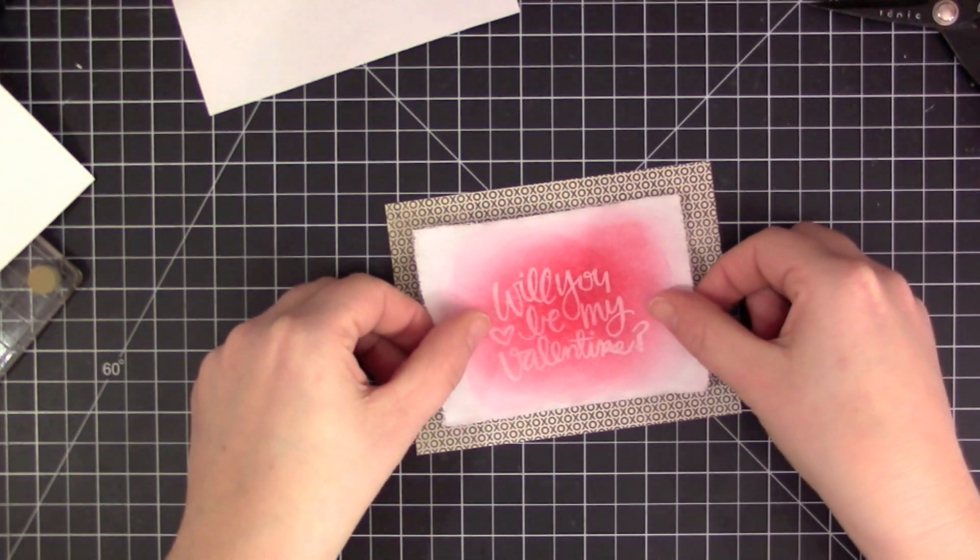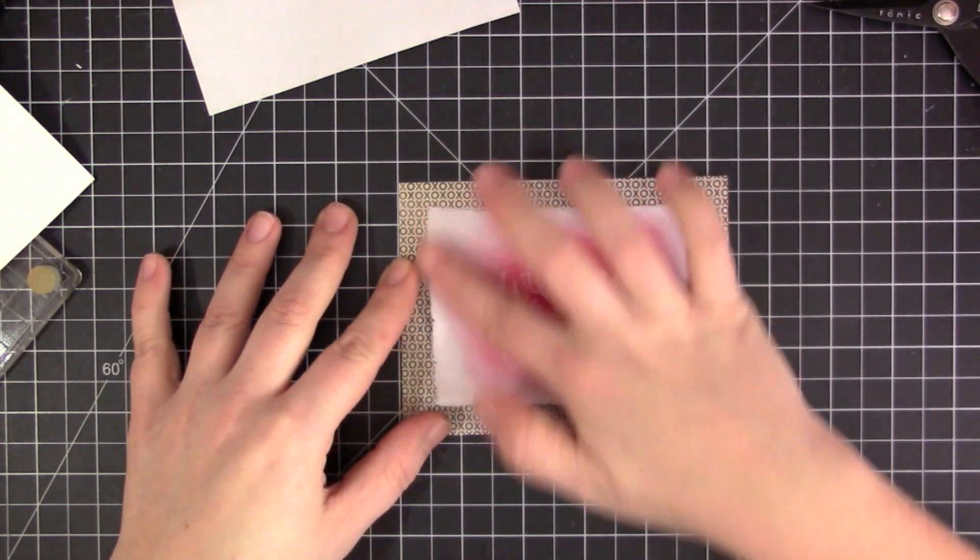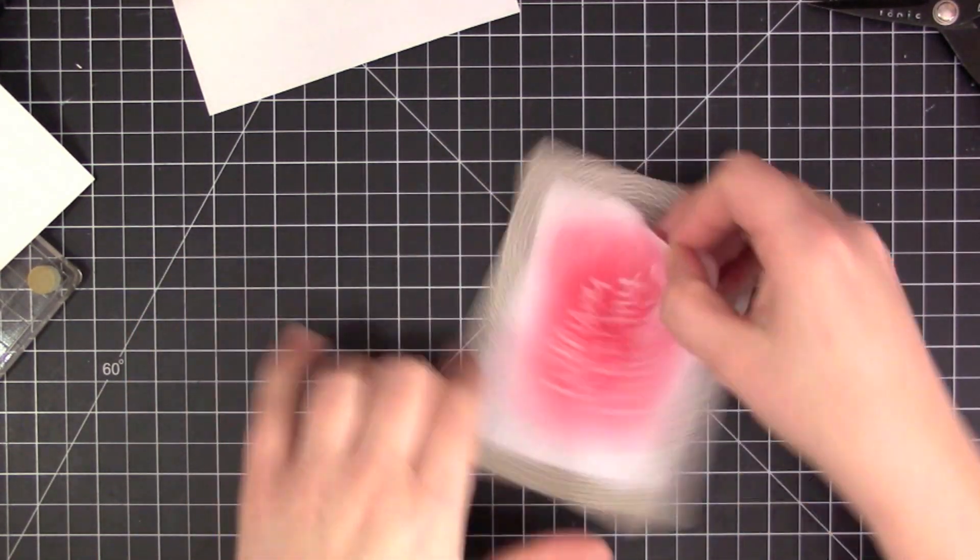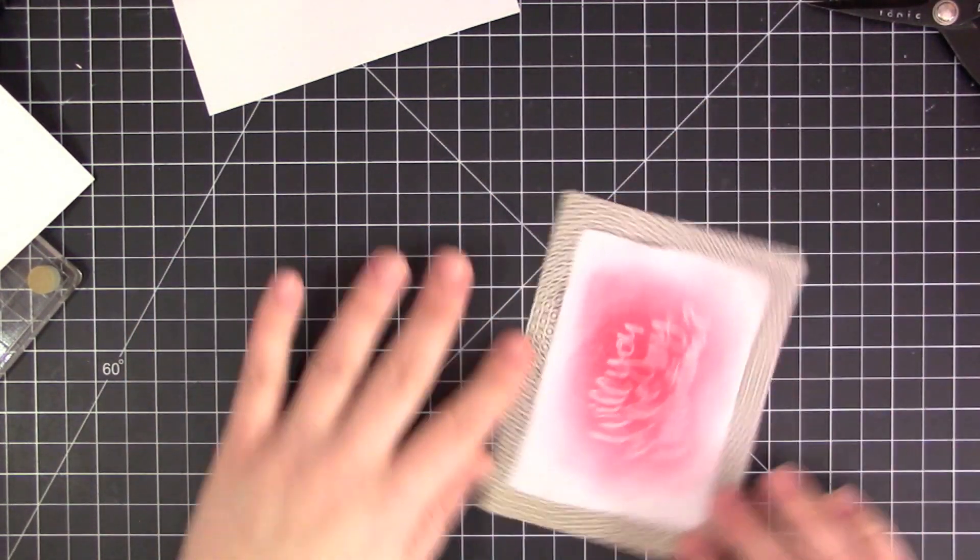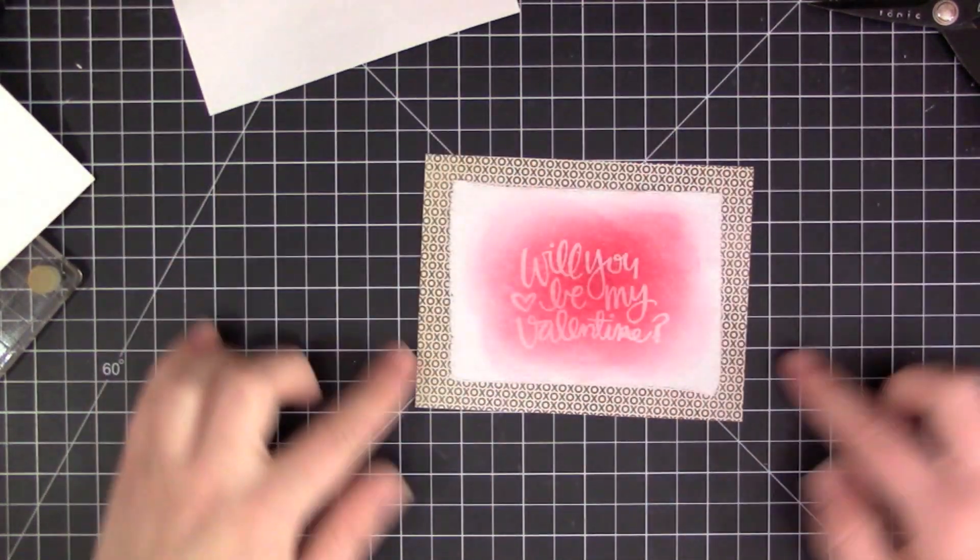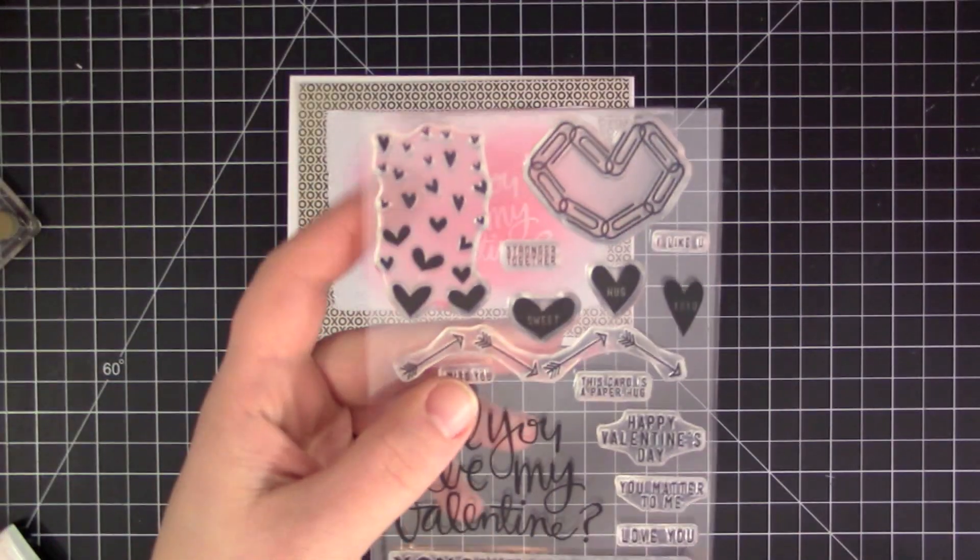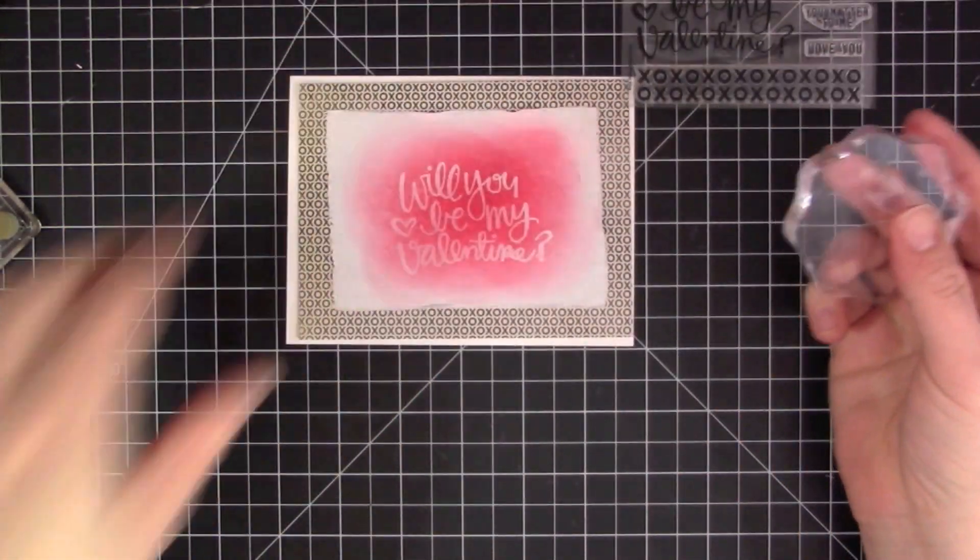I cut out one of the pattern papers—these are Crate pattern papers that come in the kit. They're really great pastel-y love themed pattern papers. I went bold for this card and used the black and white XOXO pattern paper, then I added that sticky back canvas directly on top.